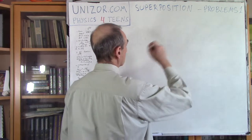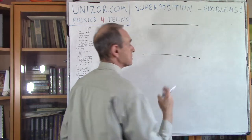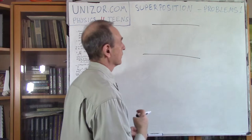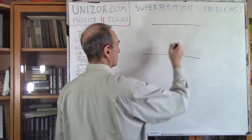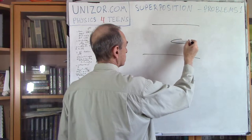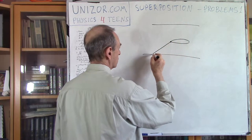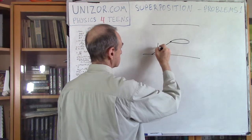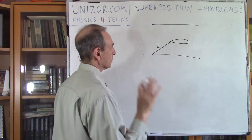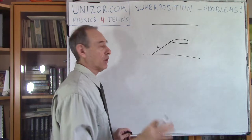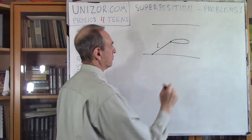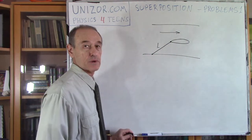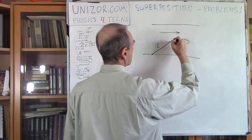First of all, we have a river — a straight river with uniform flow. There is a boat in the middle of the river which is tied to the bank by a rope of length L. There are two forces acting on this boat: number one is the flow of the river, and number two is the wind.